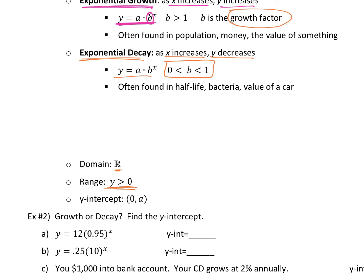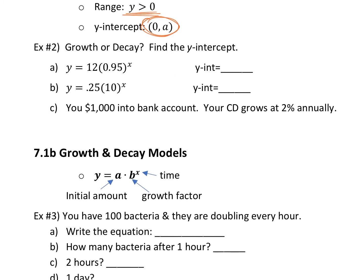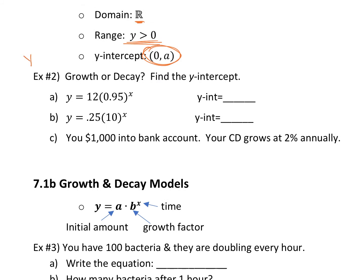Your domain for these will always be all real numbers. Your range — y is always going to be greater than zero, just like we showed earlier. There's always going to be a y-intercept and it's going to be (0, a). Whatever that number is in front of your growth factor, that's your y-intercept — it's kind of your starting point, your initial point. So that's exponential growth and decay info. We're going to look at this and determine: is it a growth or a decay model, and what will your y-intercept be?